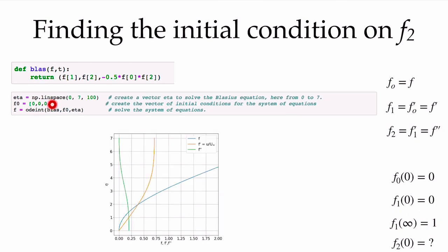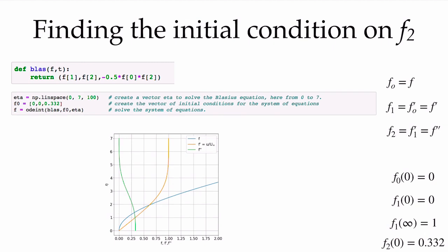Increasing the estimate to 0.2, the velocity profile comes out further — almost to 0.75 — but still doesn't reach 1. Using the value 0.332, the non-dimensional velocity profile starts at 0 as required and asymptotically approaches 1 as we move away from the surface, satisfying u/u_infinity = 1 in the free stream.